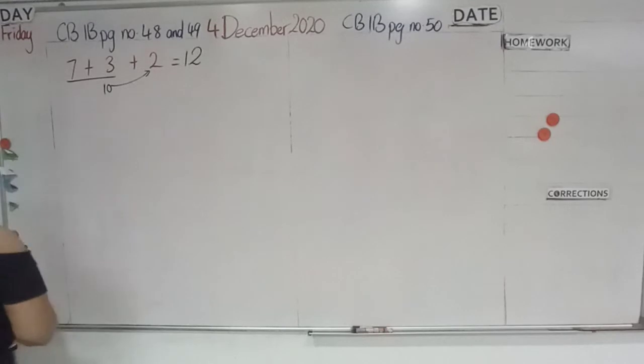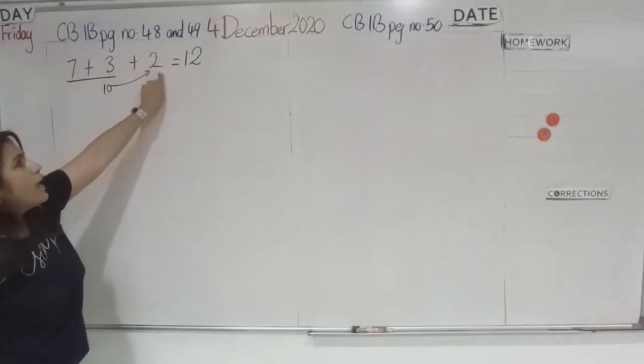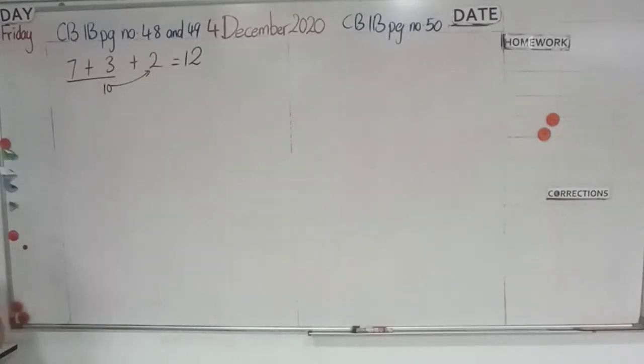So please write the answer 12 in the box. And I want you to underline 7 plus 3 quickly, and then write 10, then draw a pointy arrow at 2, and then write in the box 12.